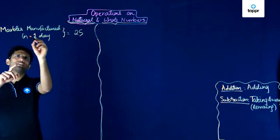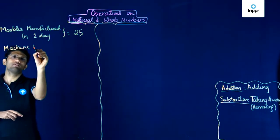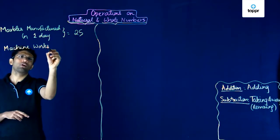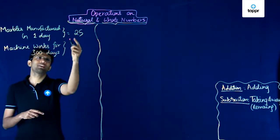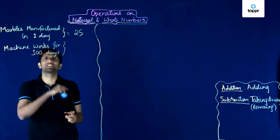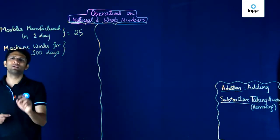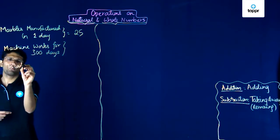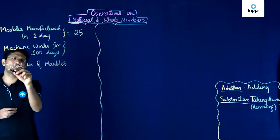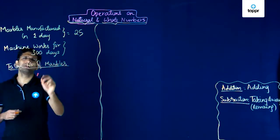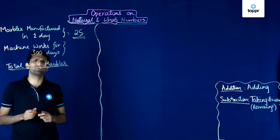Marbles manufactured in one day is 25 and the machine works for 300 days. On each day, the number of marbles manufactured is 25 and there are 300 such days. We want to find the total number of marbles manufactured by that machine in 300 days. The number of marbles made in one day is 25, and we have to find how many marbles will be made in 300 days.